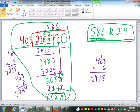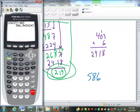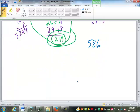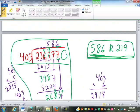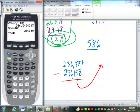There are a couple of ways we can go about this. Probably the simplest way is we write down the 586, go back to our calculator and type in 586 times the number we just divided by, which was 403. That's 236,158, how much was used up by the 586 out of our beginning amount of 236,377. So the remainder is the difference between those two.